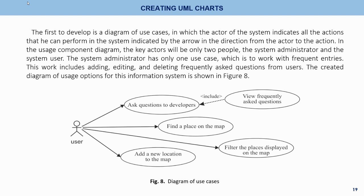The first to develop is a diagram of use cases in which the actor indicates all actions they can perform in the system. The key actors are only two: the system administrator and the system user. The system administrator has only one use case, which is to work with frequent entries — including adding, editing, and deleting frequently asked questions from users. The created diagram of usage options for this information system is shown in Figure 8.